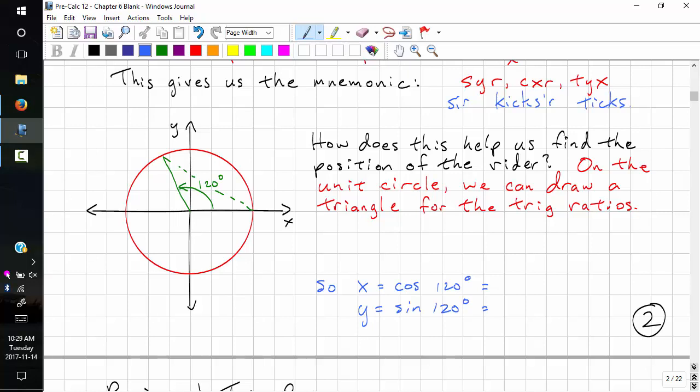How does this help us find the position of the rider? On the unit circle, we can draw the triangle for trig ratios. For instance, 120 degrees. x equals cos 120, this equals negative 1 half. y equals sine 120, this is root 3 over 2.